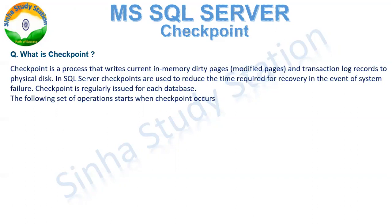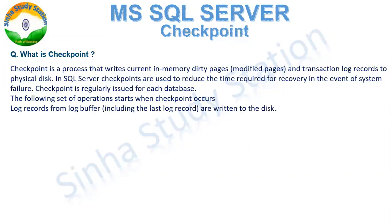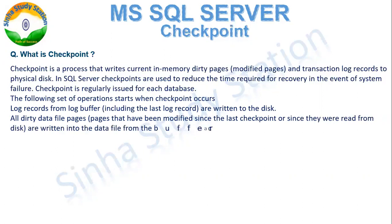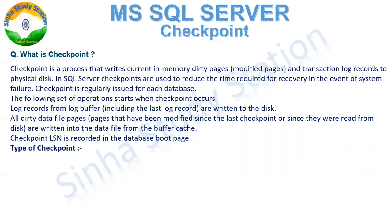During a Check Point process, first, log records from the log buffer are written to the physical disk — these are saved in the log file which is our dot LDF file. Second, all dirty data file pages from our MDF file are written to the data file from the buffer cache. Third, the checkpoint LSN, which is our log sequence number, is recorded in the data mode page.